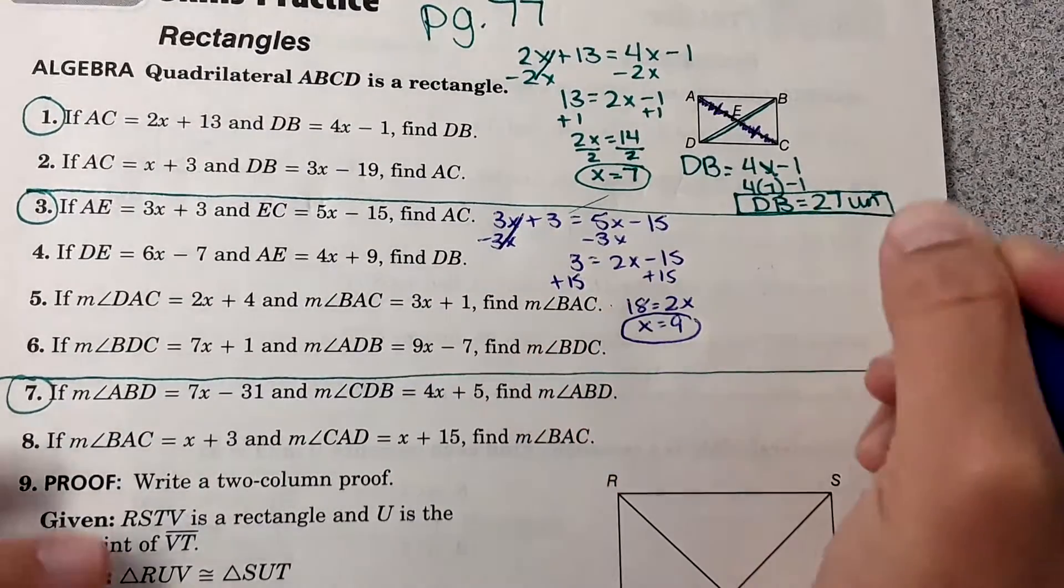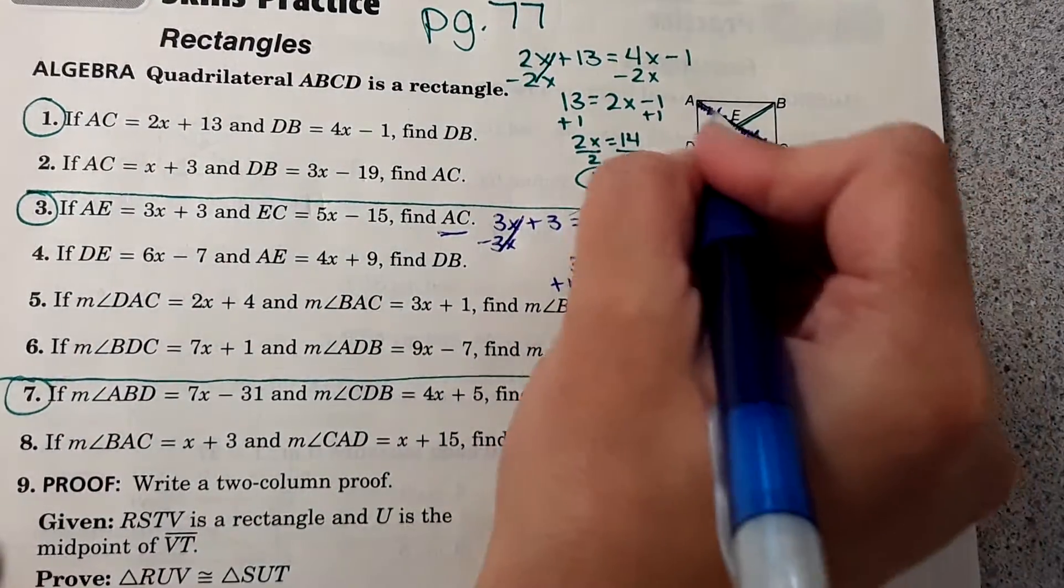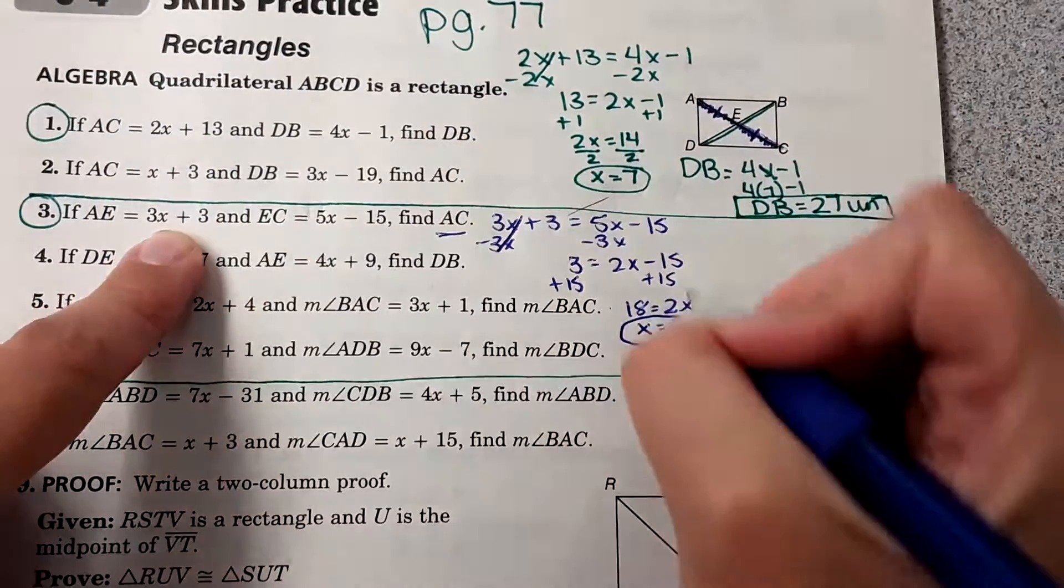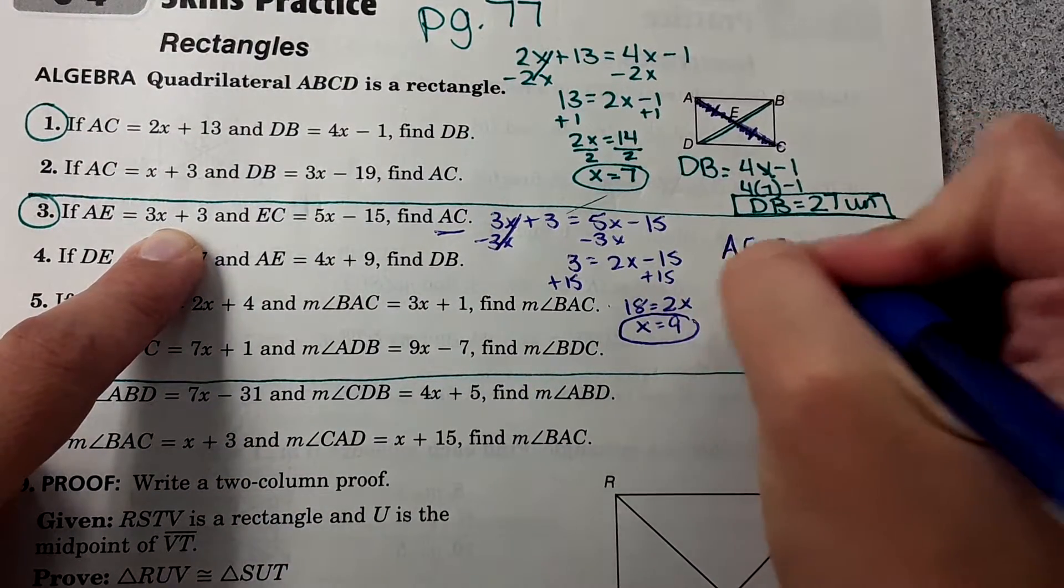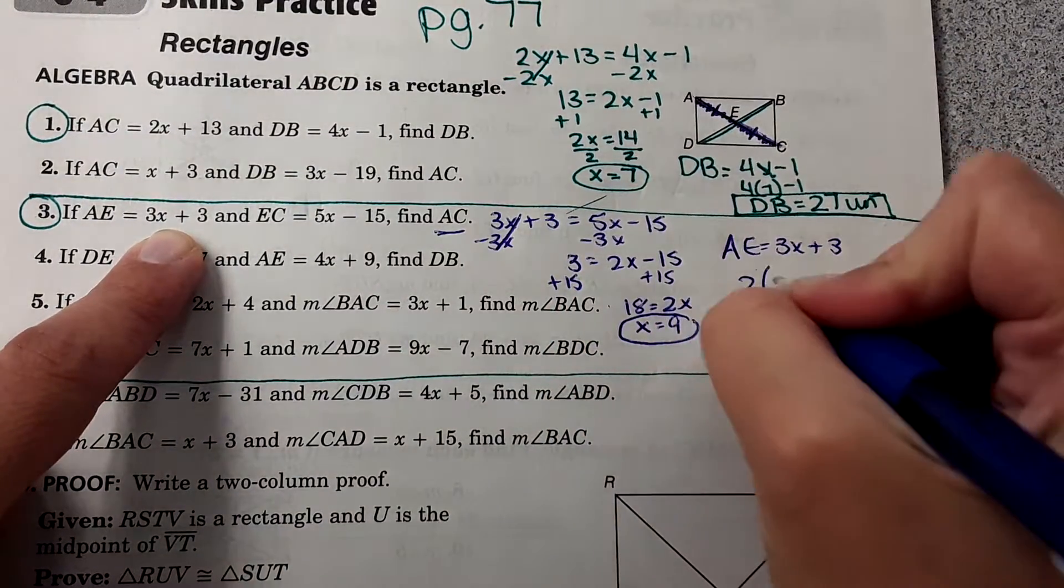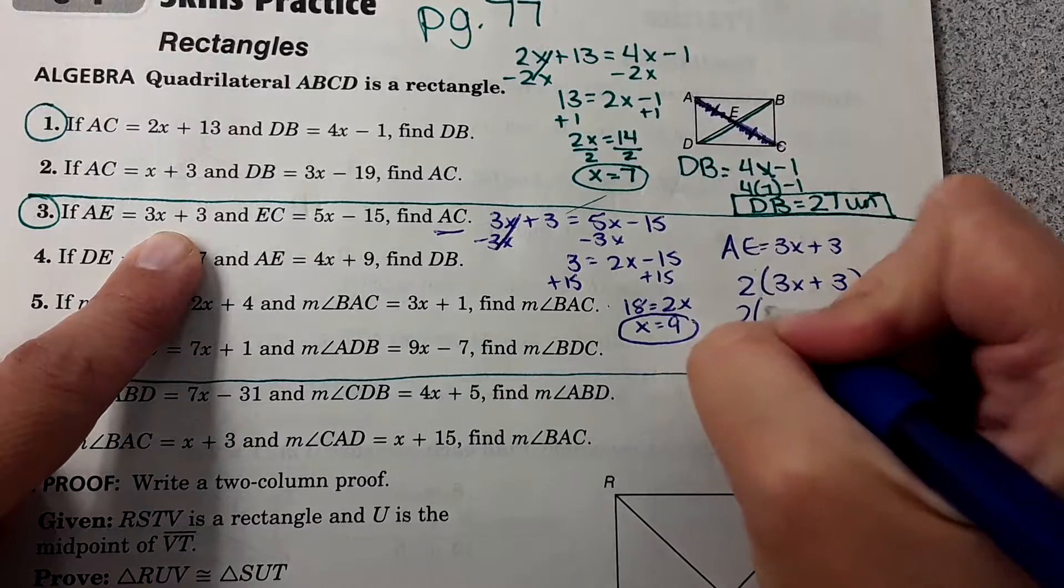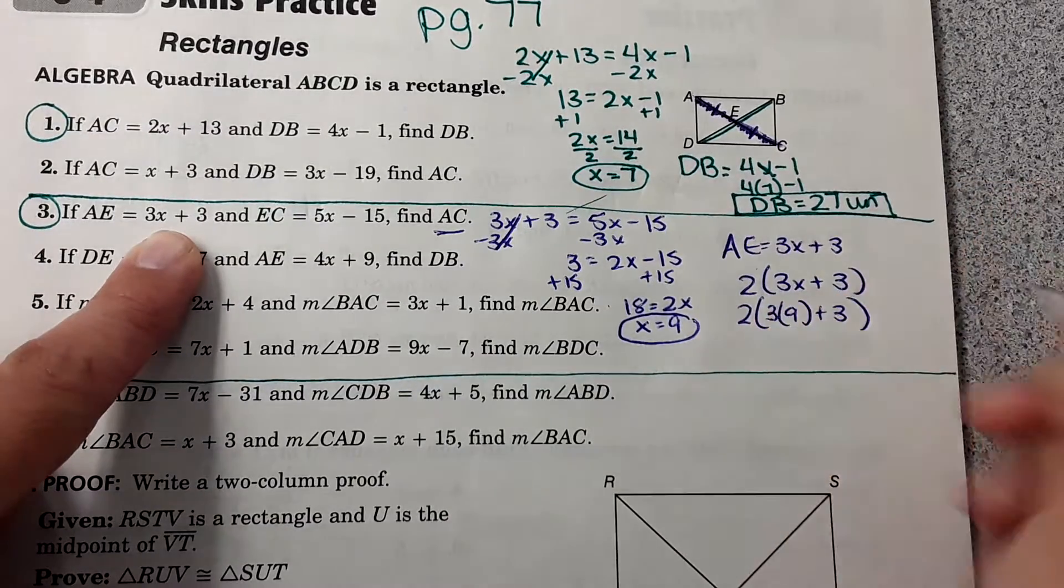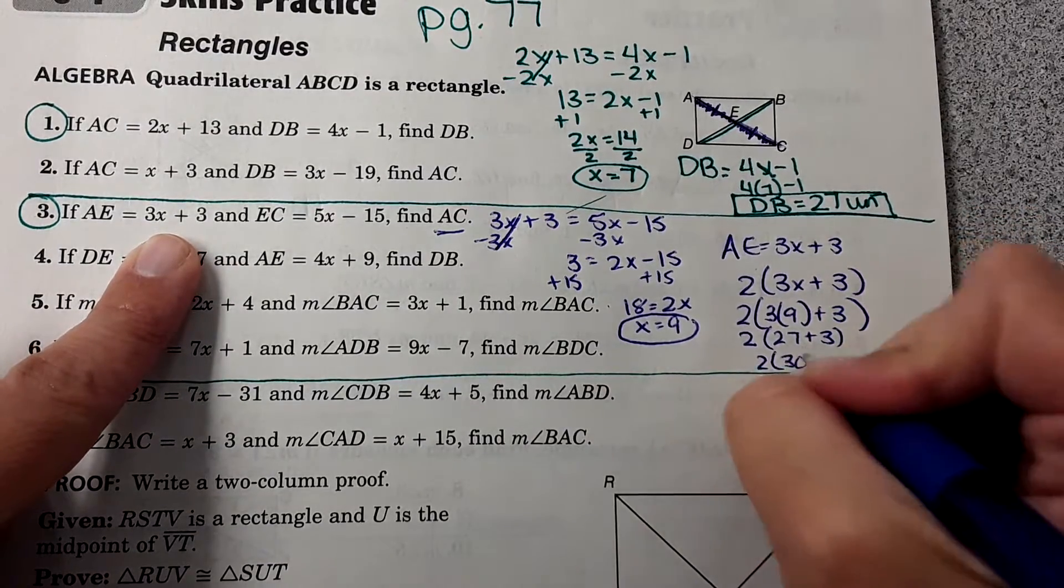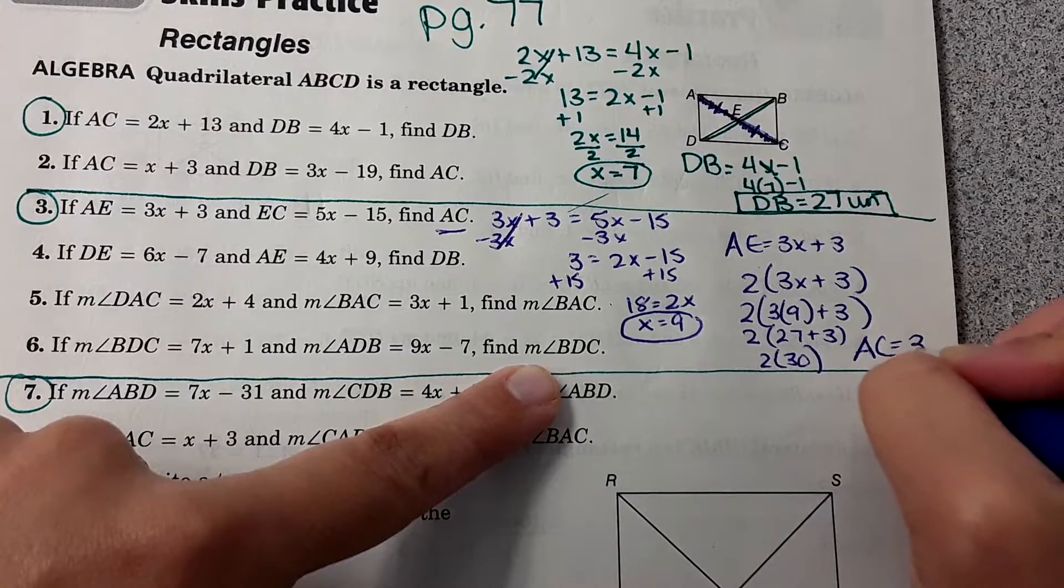Okay, so I get x equals 9. It actually asks for the length of AC. When I look at the picture, AC is that entire length right there. So there's different ways that you could do this, but I'm going to just take AE and double it. If AE is 3x plus 3, and the diagonals bisect each other, then 2 AEs would equal the entire length. So now I can plug in 9 for x. And 2 times 30 is 60. So AC is 60 units.